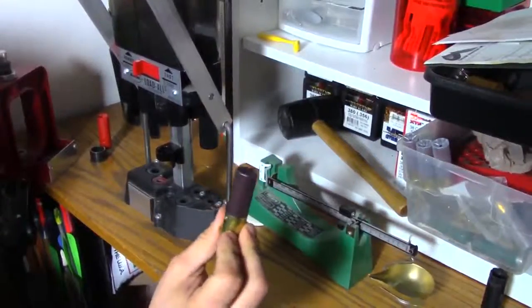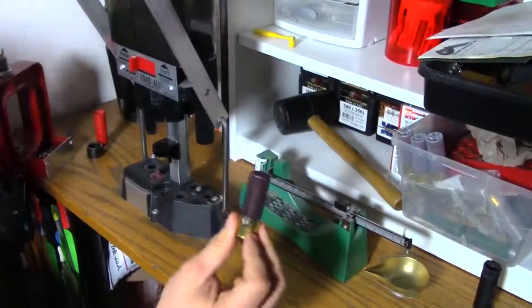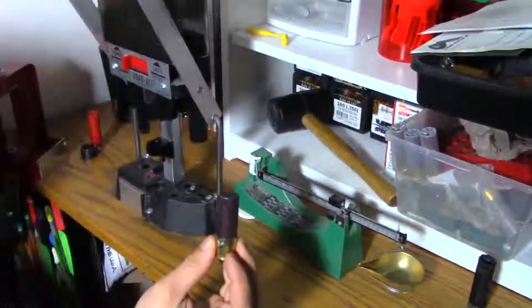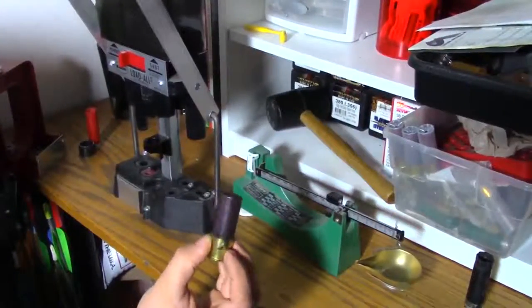This pheasant load in the box is anywhere between 13 to 17 bucks, and I can make these significantly cheaper, and you can pay for this shotgun loader within no time.